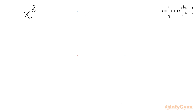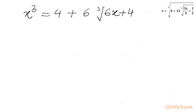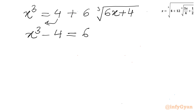So 2 and 12 cancel and 6 is left. So our equation finally becomes x cubed equals 4 plus 6 times the cube root of 6x plus 4. Let's take this 4 to the left-hand side, so x cubed minus 4 equals 6 times the cube root of 6x plus 4.